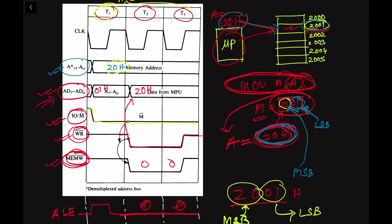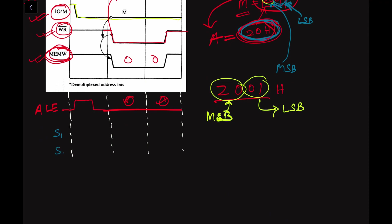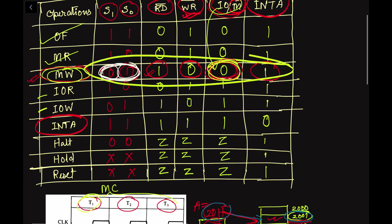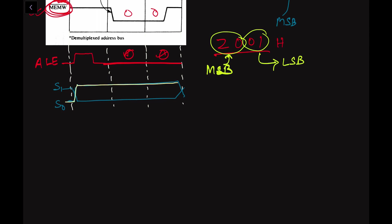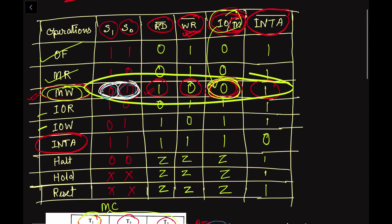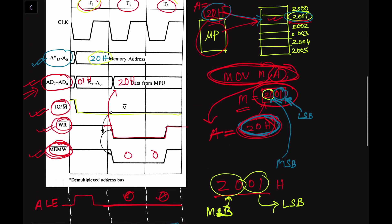Now regarding the status signals S1 and S0: from the table, S1 = 0 and S0 = 1. These are two complementary signals. S0 will be 1 (high) during the entire transmission, and S1 will be low during the entire operation to represent it is a memory write operation — S1 = 0 and S0 = 1. In this way we can draw the timing diagram for the memory write operation.